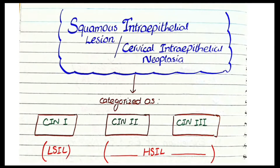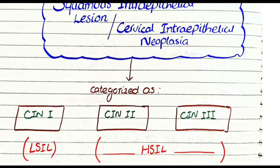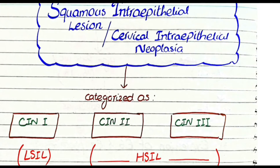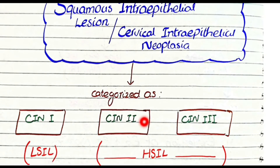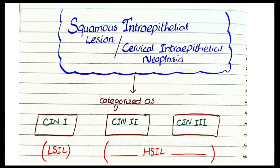These cervical precancerous lesions, called either SIL (squamous intraepithelial lesion) or CIN (cervical intraepithelial neoplasia), can be categorized in two ways. The first way is CIN 1, CIN 2, and CIN 3. Alternatively, CIN 1 can be classified as LSIL (low-grade squamous intraepithelial lesion), while CIN 2 and CIN 3 are collectively categorized as HSIL (high-grade squamous intraepithelial lesion).